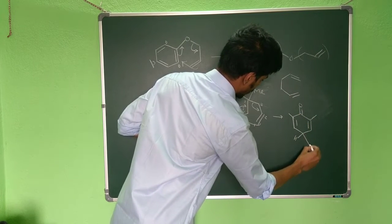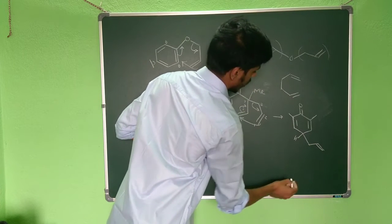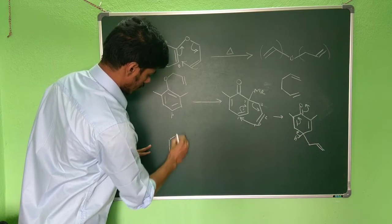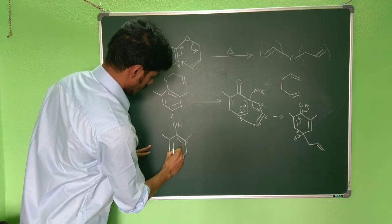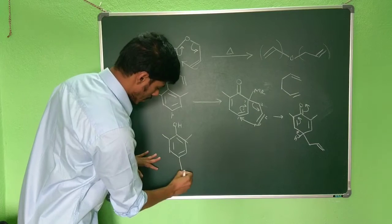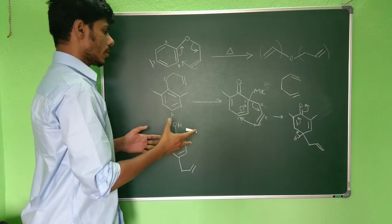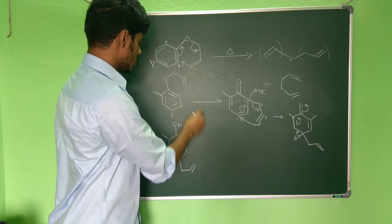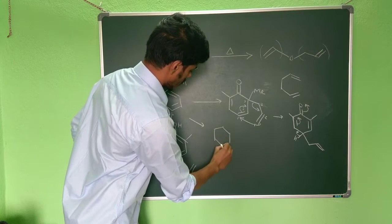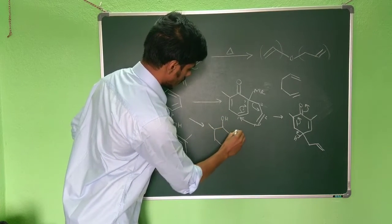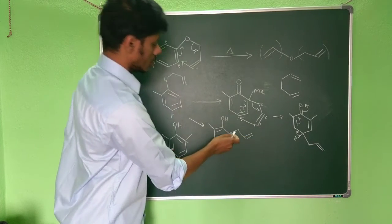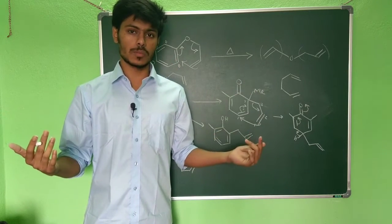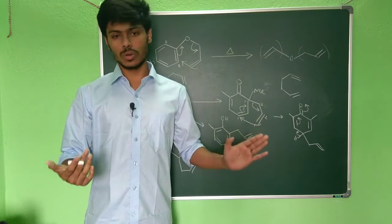The Cope rearrangement gives a new intermediate. Now you have a hydrogen here, and when this hydrogen leaves, the compound gets back its aromaticity with the allyl group now at the para position. So if both ortho positions are blocked, you get the para-substituted product. If only one ortho position is blocked, the reaction still gives the ortho-substituted product. You only get para substitution when both ortho positions are blocked.